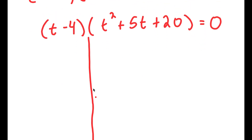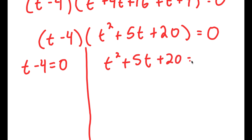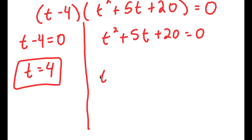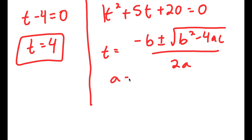So t minus 4 times t squared plus 5t plus 20 is equal to 0. This gives me two equations: t minus 4 equals 0, and t squared plus 5t plus 20 equals 0. From t minus 4 equals 0, adding 4 on both sides gives t equals 4. For t squared plus 5t plus 20 equals 0, I have to use the quadratic formula: negative b plus or minus the square root of b squared minus 4ac, all over 2a. In this case, a is 1, b is 5, and c is 20.